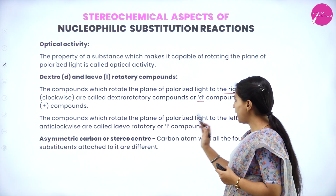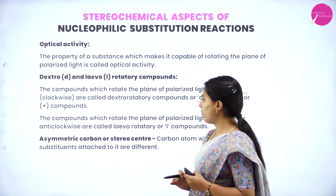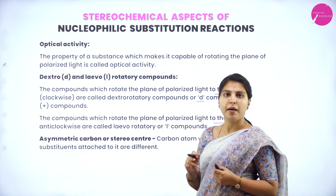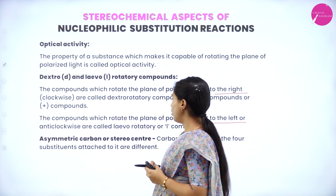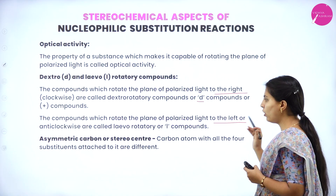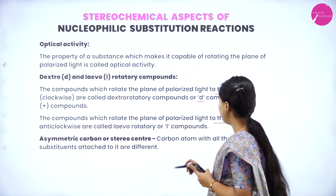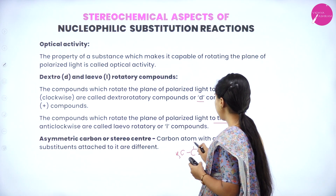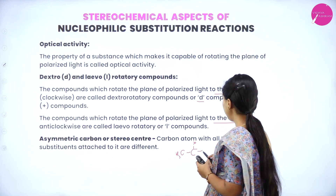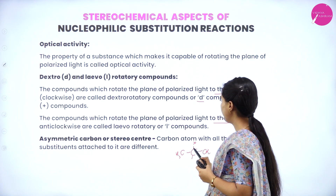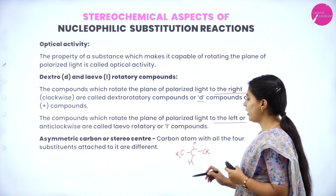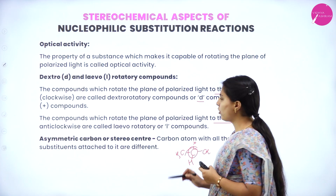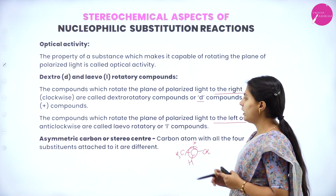The compounds which rotate the plane polarized light to the left or anticlockwise are called levorotatory compounds, designated as L or minus. Asymmetric carbon or stereocenter: a carbon atom with all four substituents attached to it being different. For example, a carbon atom with CH3, X, a different substituent, and H — with different substituents at all four sites — is called a stereocenter or asymmetric carbon.